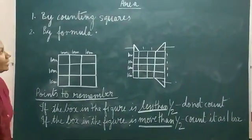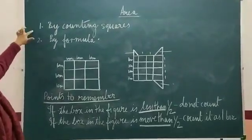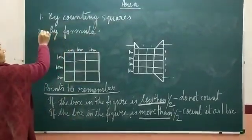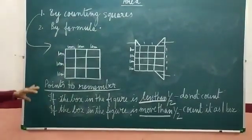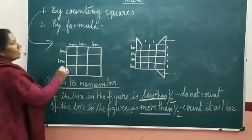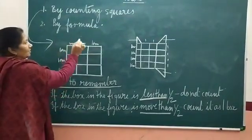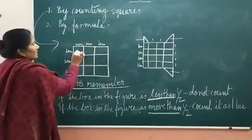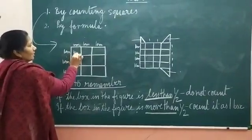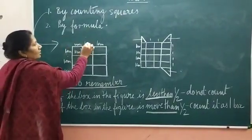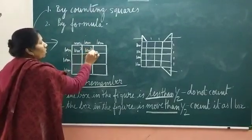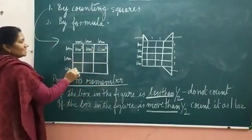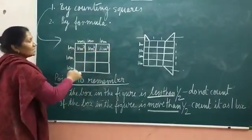Now, how to find the area of a figure? We have two methods. The first method is by counting squares. In this figure you can see I made square boxes — one centimeter by one centimeter each. So one centimeter by one centimeter is one centimeter square. If you count all: one, two, three, four, five, six, seven, eight, nine. What is the area of this given figure?